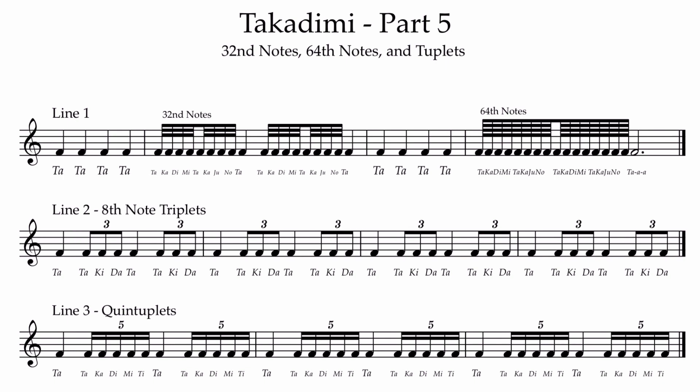You're not supposed to come to this video until you have become proficient through Part 4. So if you're really comfortable up through Part 4, this will make sense. So you've got 32nd notes right here. You'll notice 8th notes only had one beam, 16th notes had two beams, 32nd notes have three beams, and if you look here on the right, 64th notes have four beams.